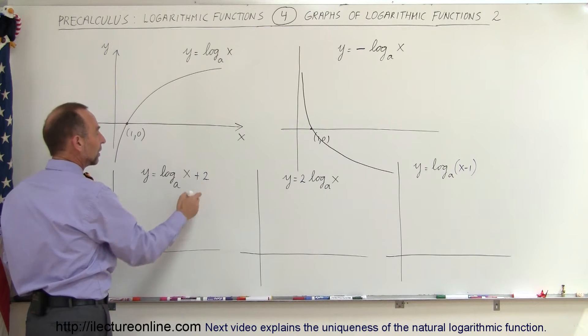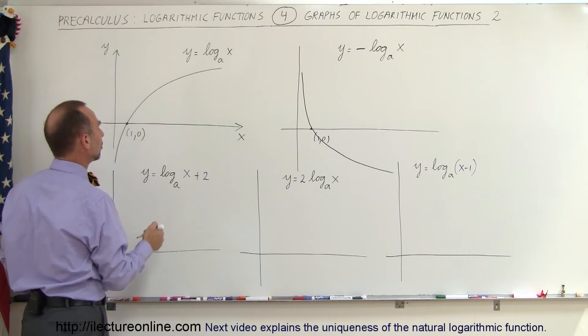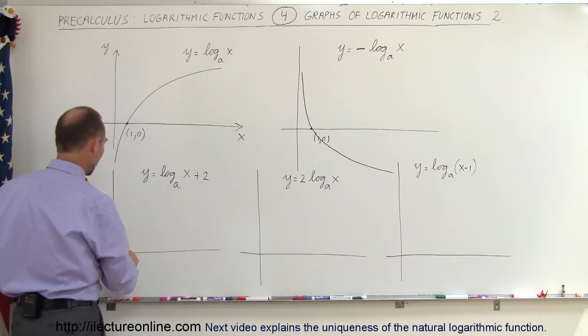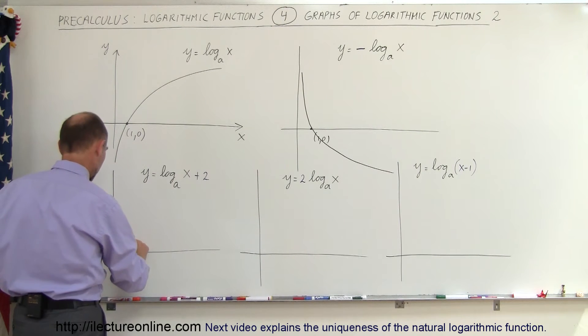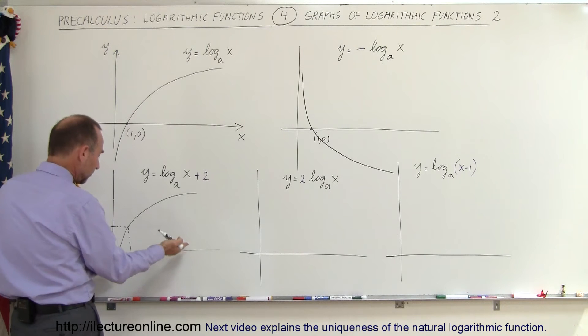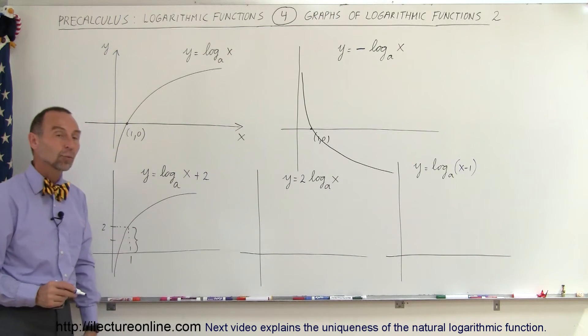In the case that we add a constant to it, it just simply raises the whole graph by two units in this case because we add plus 2. That means when x is equal to 1, y will therefore be equal to 2. So that's 1, 2, like this. So this is 1, this is 2, and the whole function will go through like this. And so the whole logarithmic function has been raised a total of 2 units in the positive y direction.